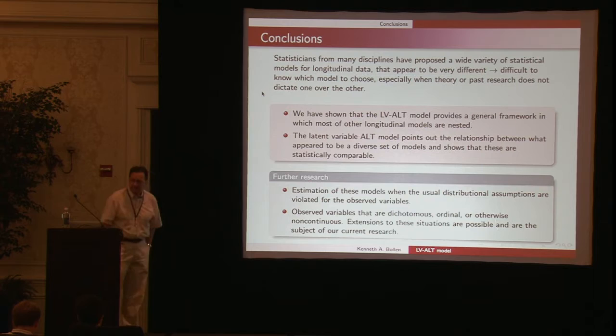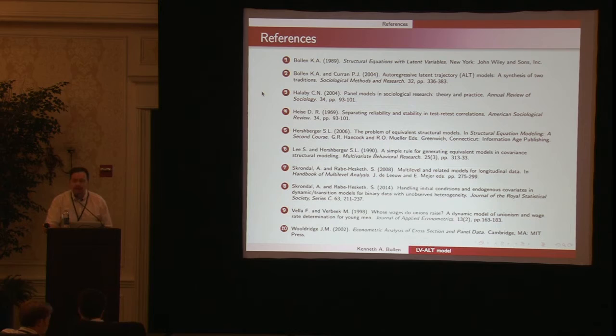In conclusion, statisticians from different disciplines have proposed many models for longitudinal data. They appear very different - comparing growth curve to random or fixed effects models seems totally different. What we've done is develop a general structure so you can see those models as special cases of a more general possible longitudinal model. Further research includes what to do if we have observed variables that are categorical, dichotomous, ordinal, or otherwise non-continuous. We're working on extensions, but what I presented is the version with approximately continuous variables. I welcome any questions.